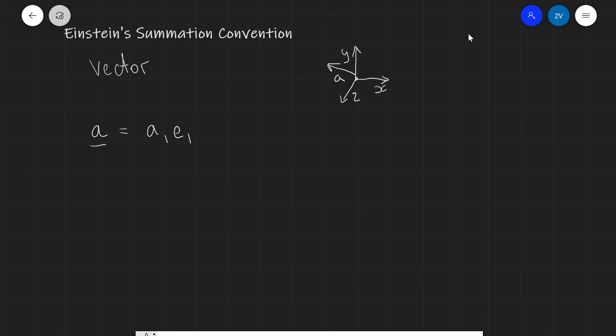You could write it as a₁e₁, which is the component in one of the directions, plus a₂e₂, plus a₃e₃. An additional way of writing this that you might come across is just this notation.